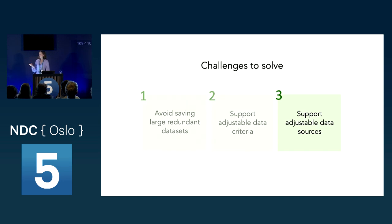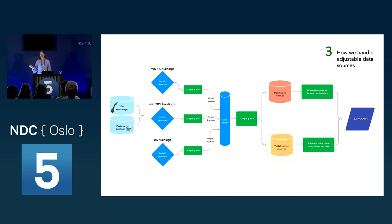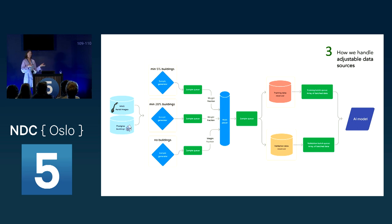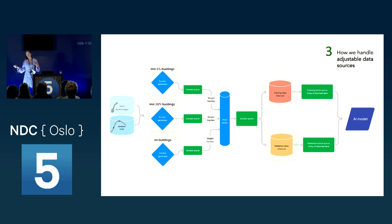Challenge three — supporting adjustable data sources — is already largely solved by the streaming approach. If we change a data source, we just create a sample generator that reads from that data source instead, the data flows through, and we train on it. This is now pretty well supported.